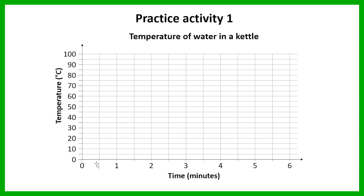So let's have a look at what your graph should look like. The first point was the starting temperature of 20 degrees Celsius at time zero. Then the water heated up and reached 100 degrees after two minutes. It stayed at a constant temperature for 30 seconds, so at the end of those 30 seconds the temperature is still 100 degrees Celsius. Then the kettle turned off and the temperature dropped to 75 degrees Celsius after three more minutes — at the five-and-a-half minute mark. Those are the points you should have plotted.